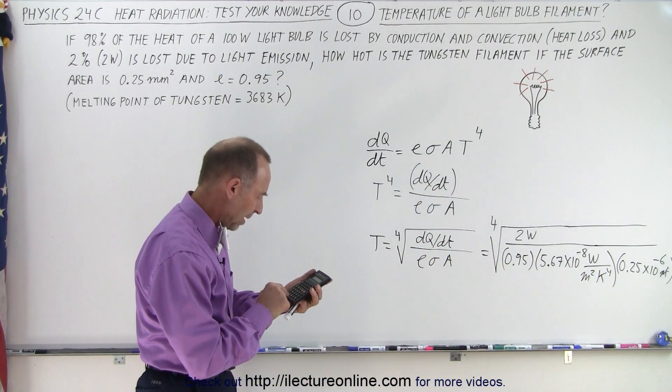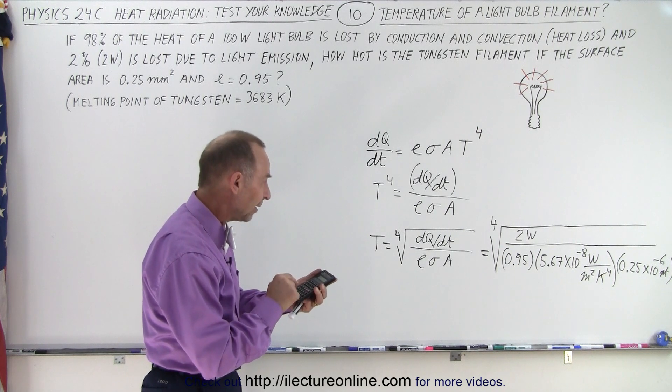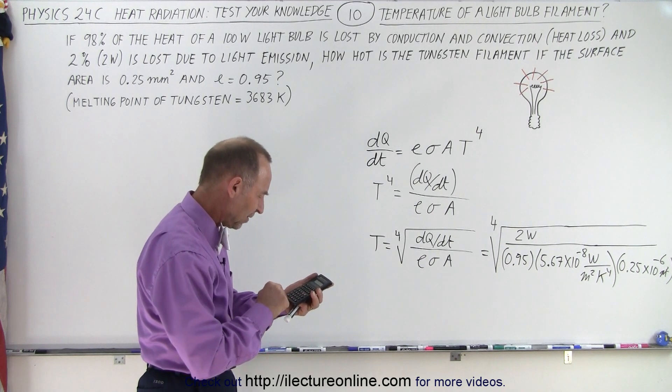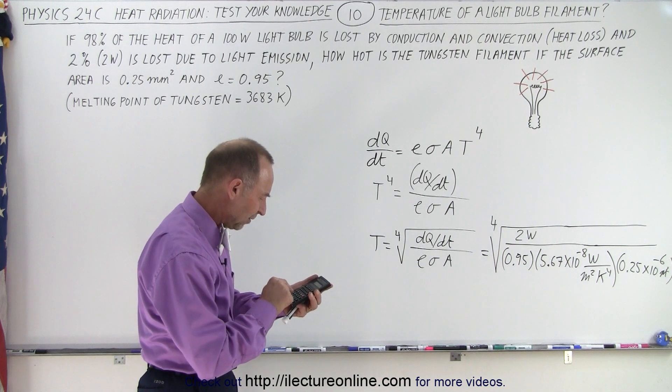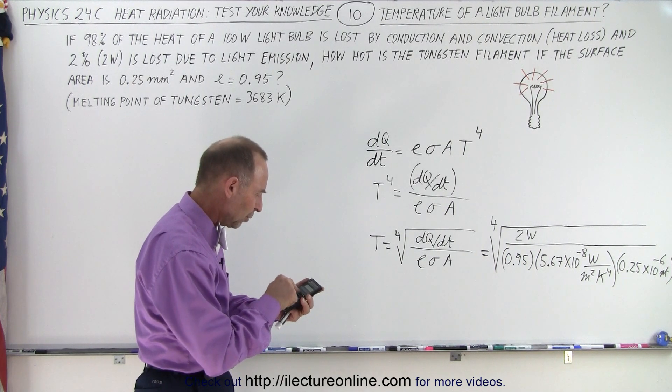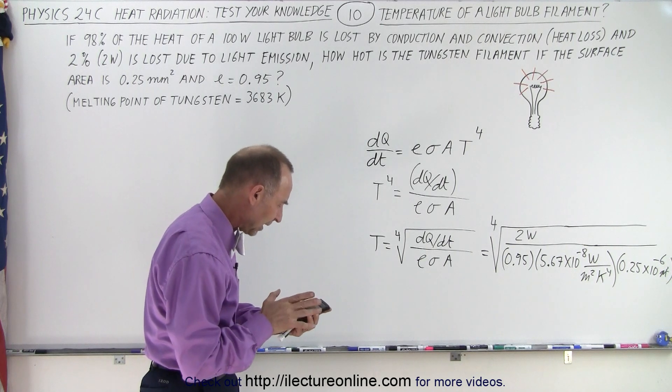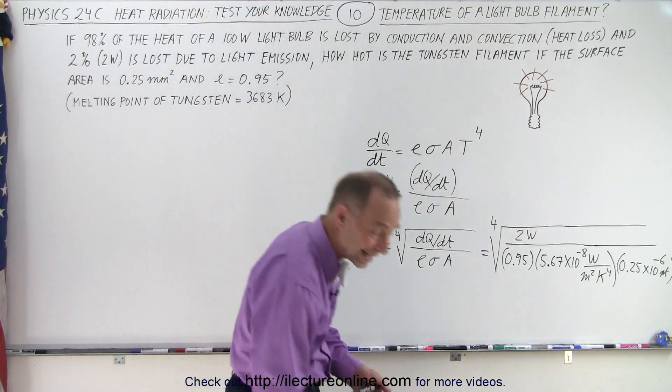Let's give it a try. So I have 2 divided by 0.95 divided by 5.67 E-8 divided by 0.25 E-6. And now we take the square root and we take the square root again, and I get 3490.